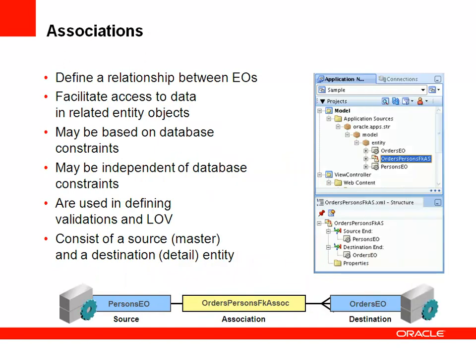Associations represent relationships between entity objects. In many cases these map to relationships defined in the database through foreign key–primary key relationships, but they can also be independent of any database-defined relationship. Associations are used to access data in one entity object from another, making them very useful in the definition of lists of values as well as validations.